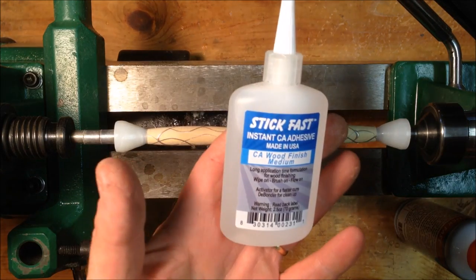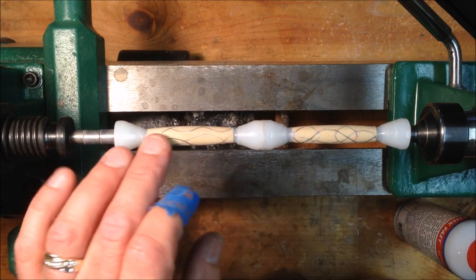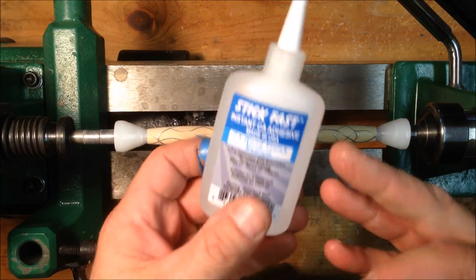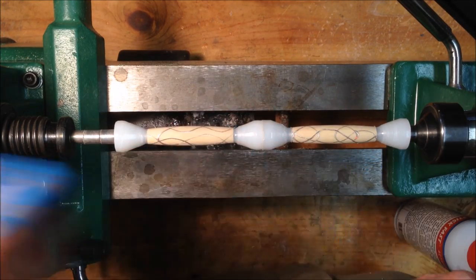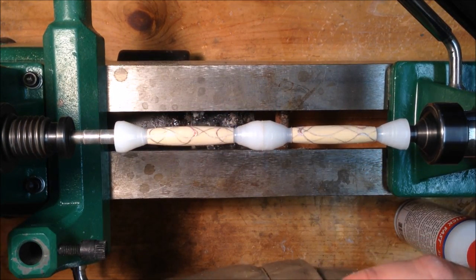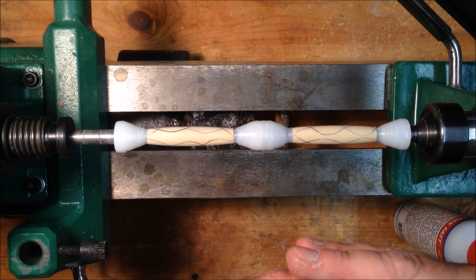I'll start off with a couple of coats of medium, and I'll hit it with some accelerator. I don't feel any gaps, but that way, if there are any gaps, this will sort of fill them in. And once I get maybe three coats of the medium on there, I'll sand it with some micromesh, and then we'll go back and put several coats of a thin CA. So, let's get started.